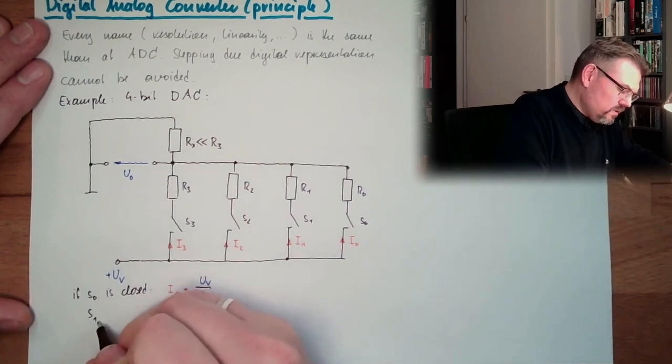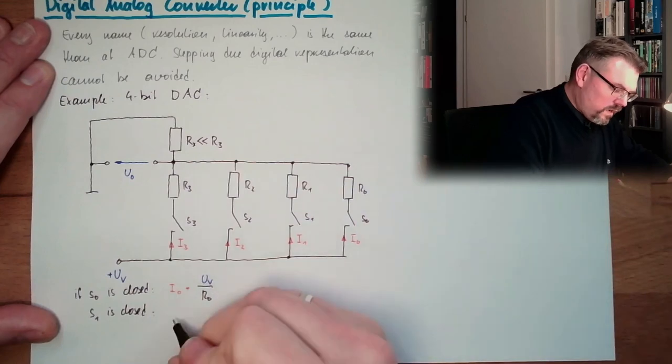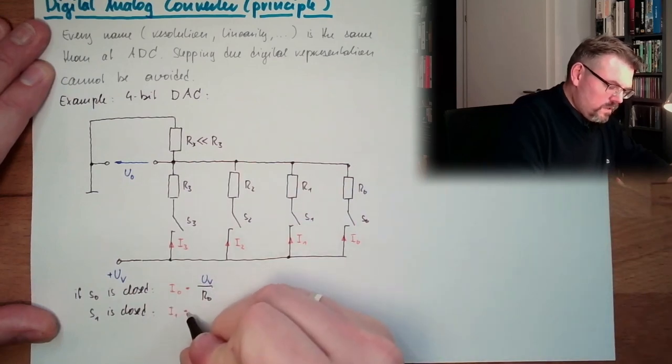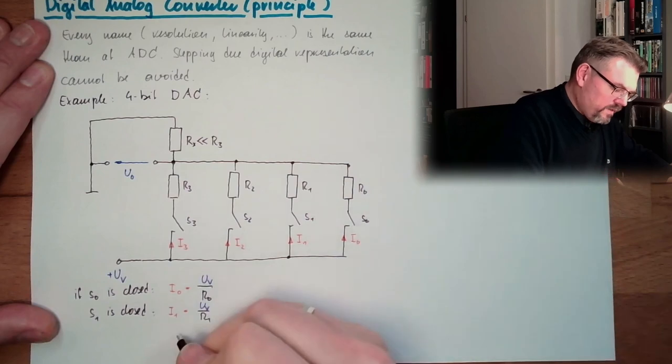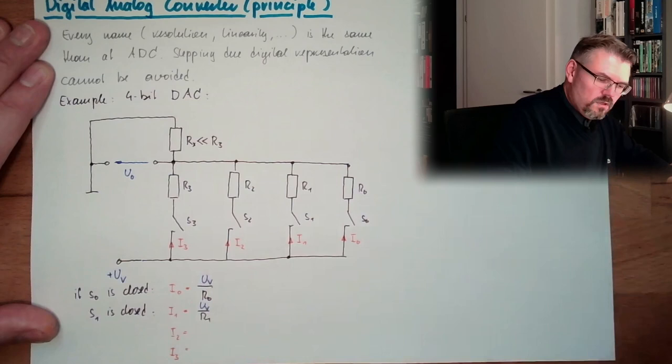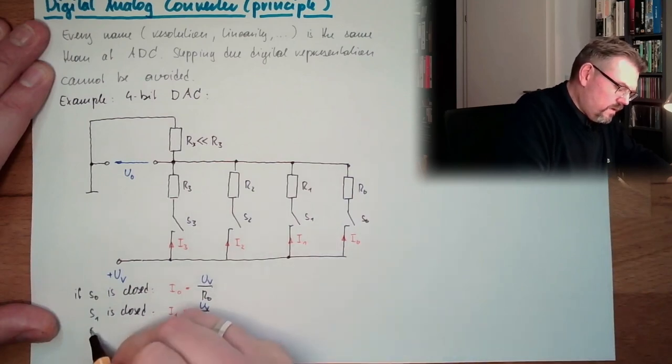If S1 is closed, I1 equals UV divided by R1, and so on. So I2, I3, and so on. This is always UV divided by R2 and R3. S2 is closed, S3 is closed.